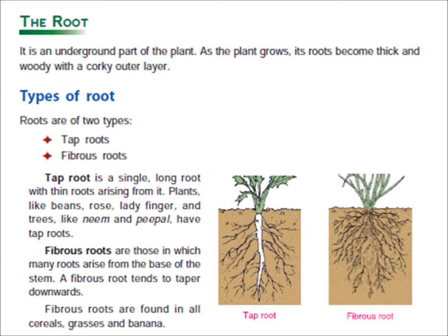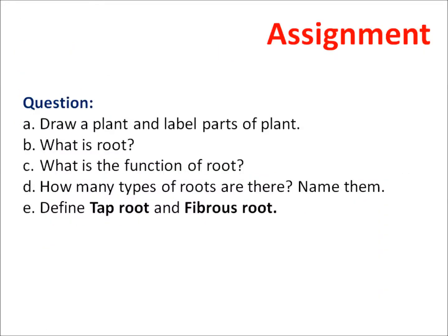I think all of you have understood the topics. Now I am going to give you some assignments. Some questions are given here and you have to solve them. First, read the chapter and then try to solve the answers. Question 1: Draw a plant and label the parts of the plant. Question 2: What is root? Define the root and write its function. Question 3: How many types of roots are there? Name them. Question 4: Define tap root and fibrous roots. Solve these questions and show me the next day. Thank you. Have a nice day.